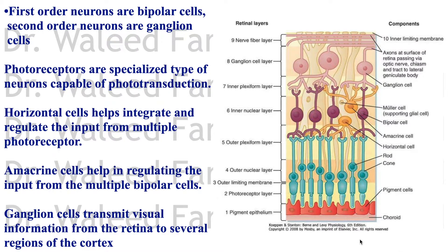The first-order neuron is the bipolar cells — the first cells that receive input from the photoreceptors. The second-order neurons are the ganglion cells. The photoreceptors are a specialized type of neuron capable of phototransduction — the conversion of electromagnetic impulse (light) into an electrical impulse.